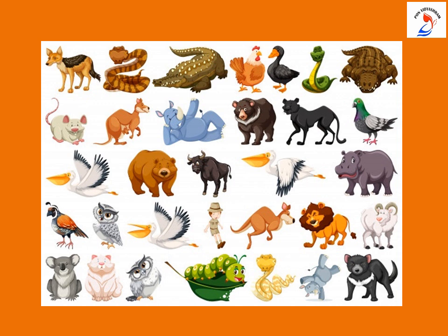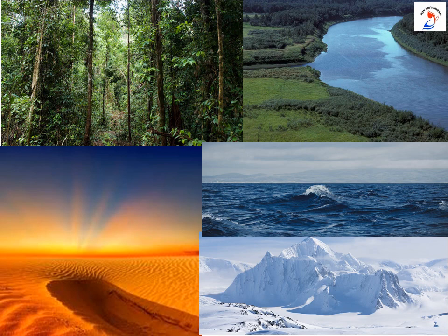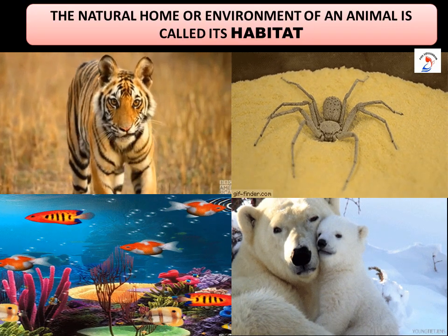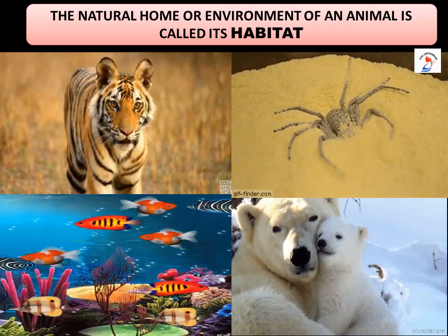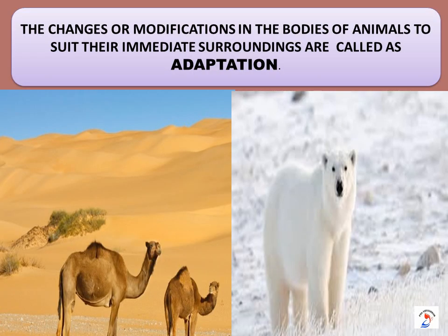Animals are seen all around us in different surroundings. They survive on land, sea, and air. They are found on mountains, forests, deserts, polar areas, oceans, seas, rivers, etc. The natural home or environment of an animal is called its habitat. The changes or modifications in the animal bodies to suit their immediate surroundings are called adaptation.